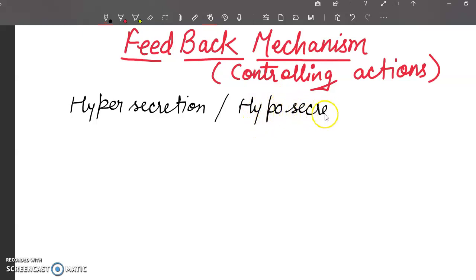To control these secretions is very important. This controlling mechanism is known as feedback mechanism. When there is too much hormone, it should be slowed down. When there is too little, speed up.